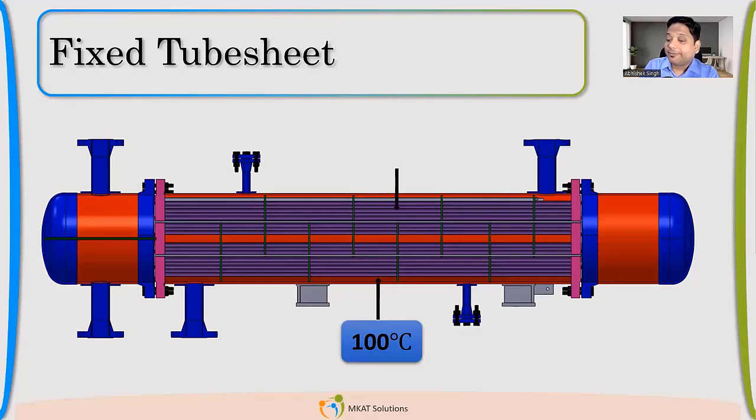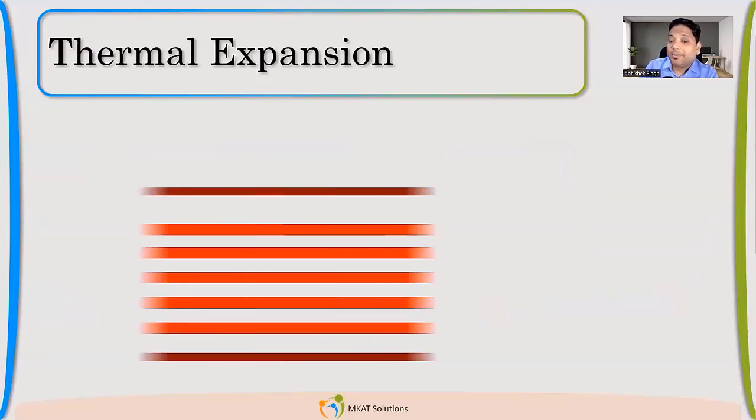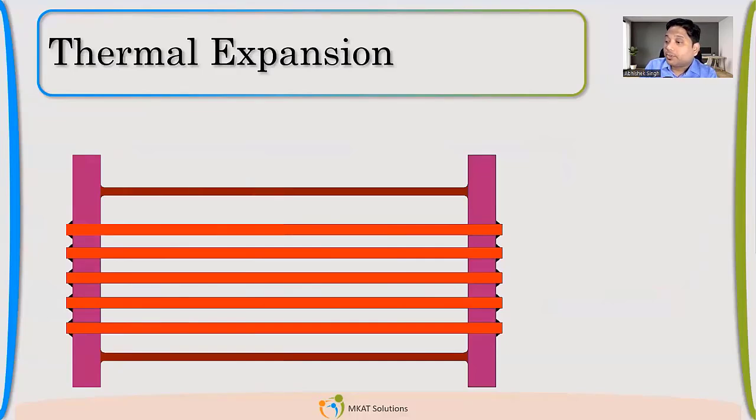So let us take one example where my shell side is at 100 degrees Celsius, just for example. In my tubes, there is fluid which is having 250 degrees Celsius. What will happen? So tubes are at very high temperature, so their expansion will be very high. We calculate the expansion with thermal expansion coefficient. So your final length for that temperature will be more compared to the shell, because shell will not expand that much because it's at lower temperature. Delta T is small for that.